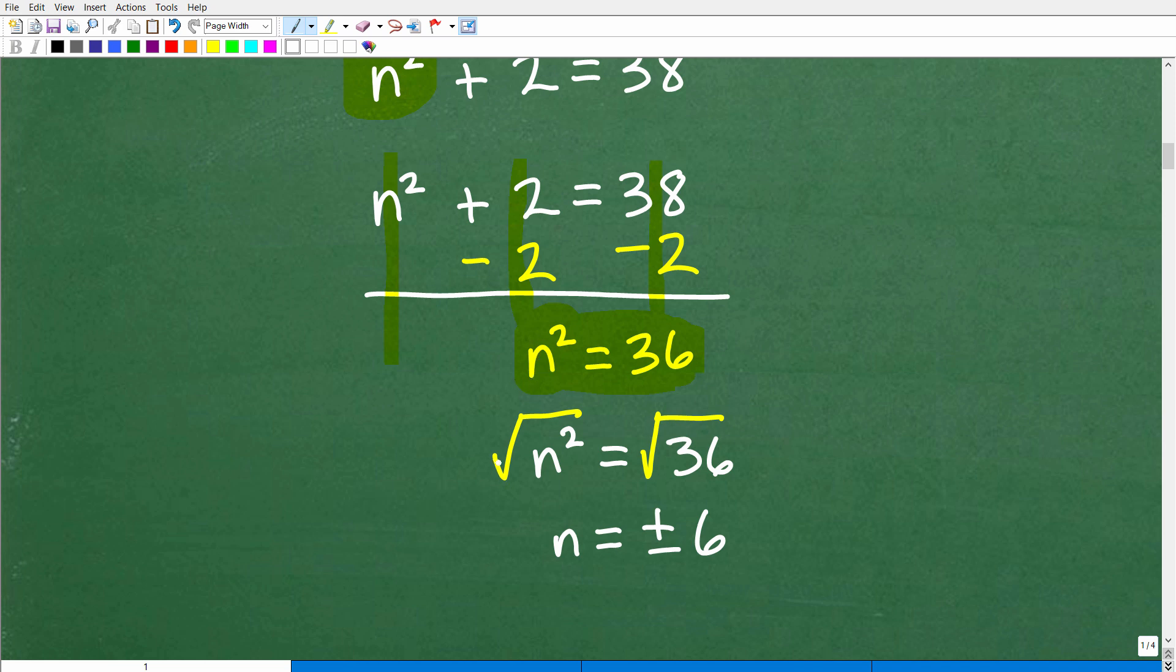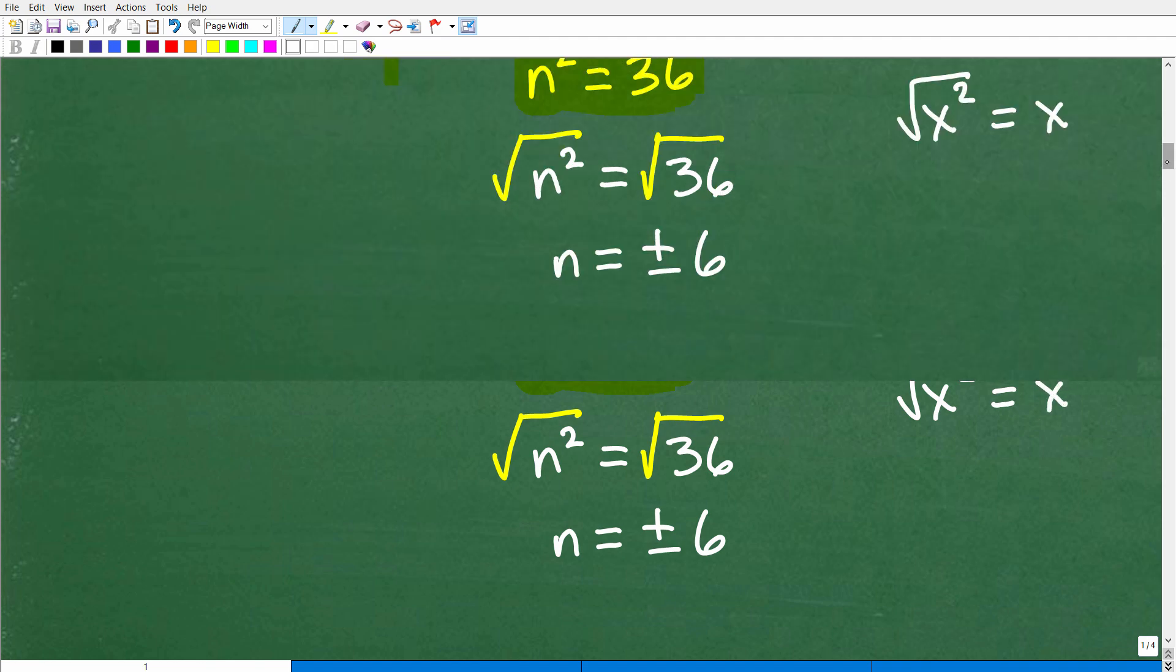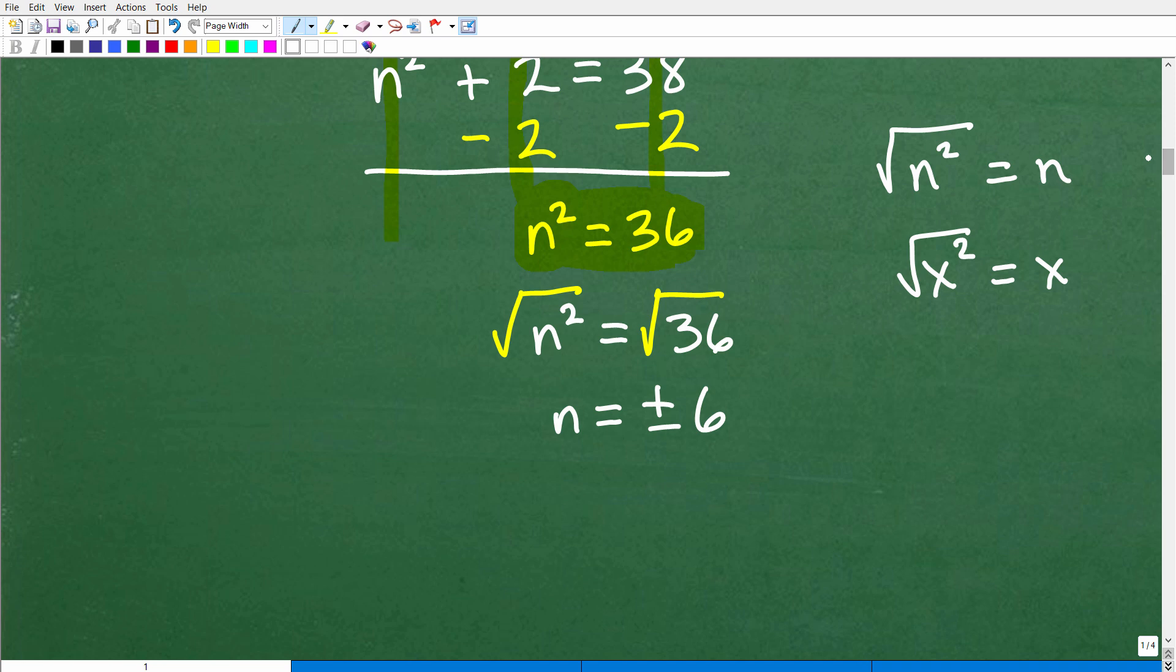So how do I solve for n when I have n squared? Well, what we have to do is take the square root of both sides. Anytime you take the square root of a variable like n squared, the answer is n. If I'm trying to solve for x and you have x squared, just take the square root of that and you get x. Now here's the deal, though. When you take the square root of the left-hand side, you always have to take the square root of the other side. So here we're just going to take the square root of both sides. We're going to get n. The square root of n squared is n is equal to positive negative 36.